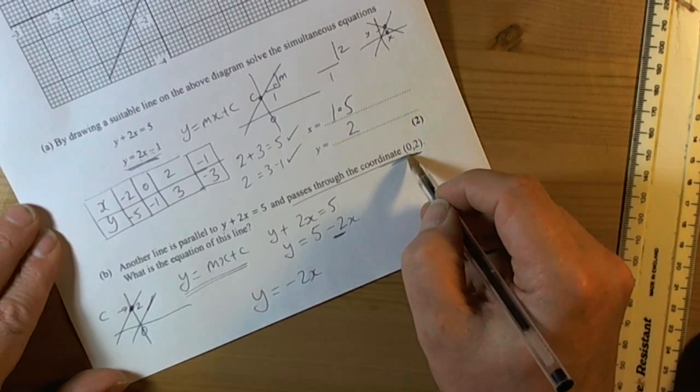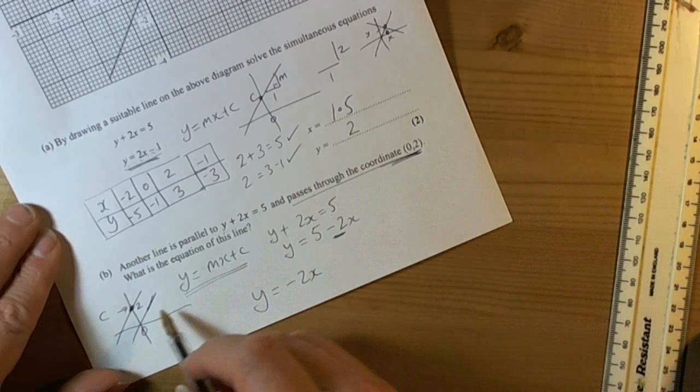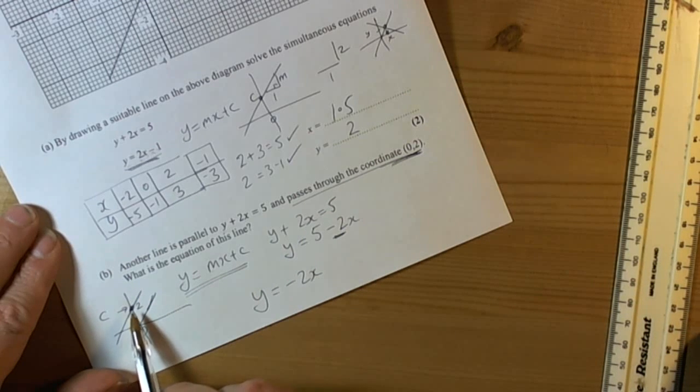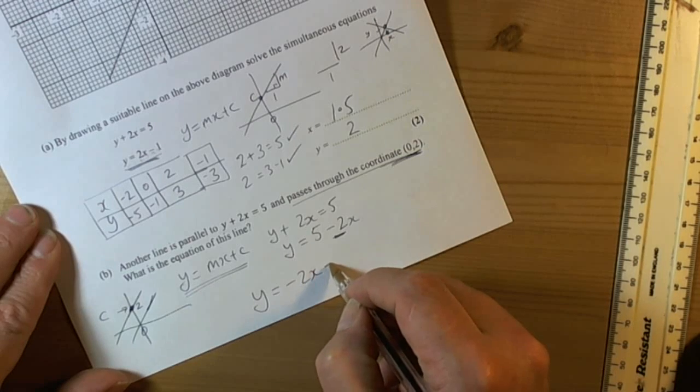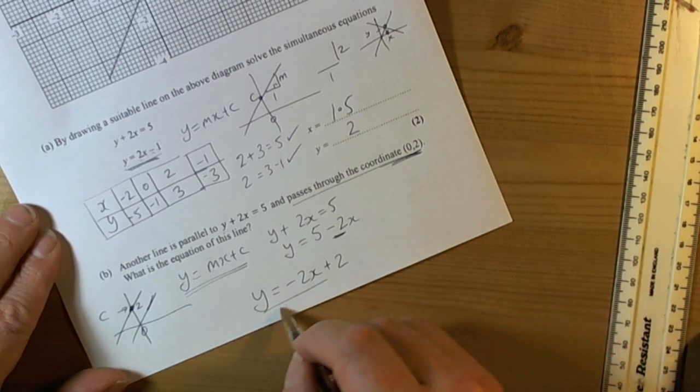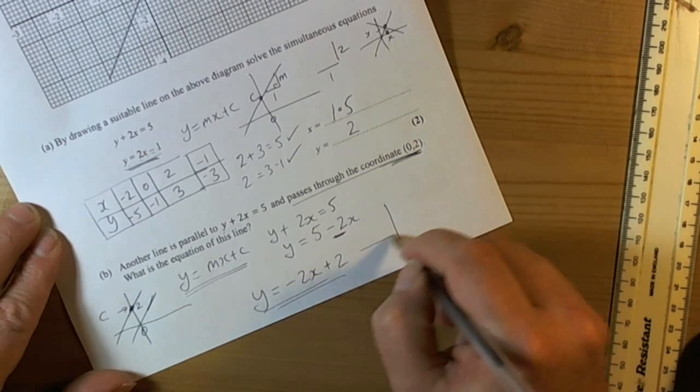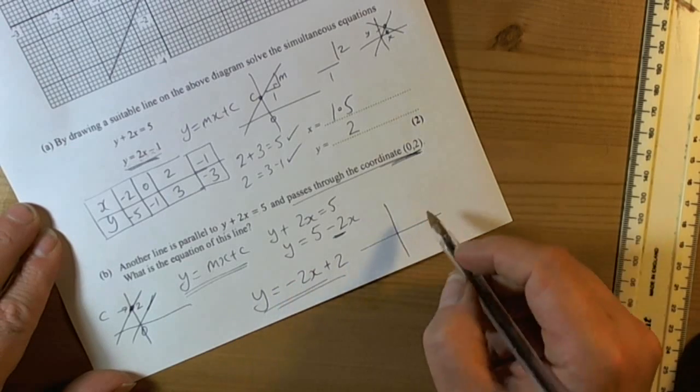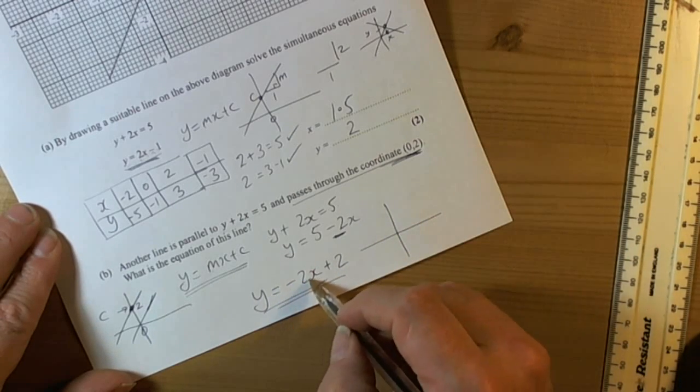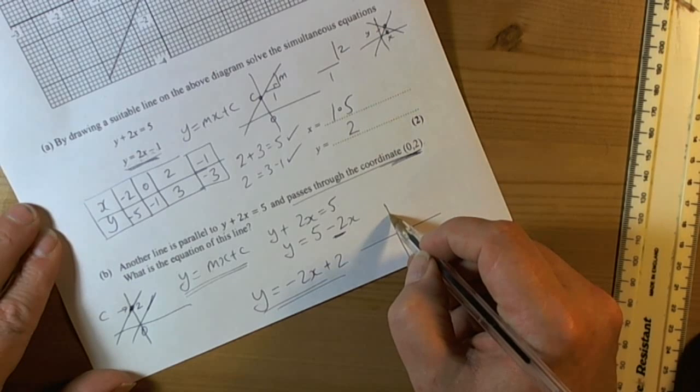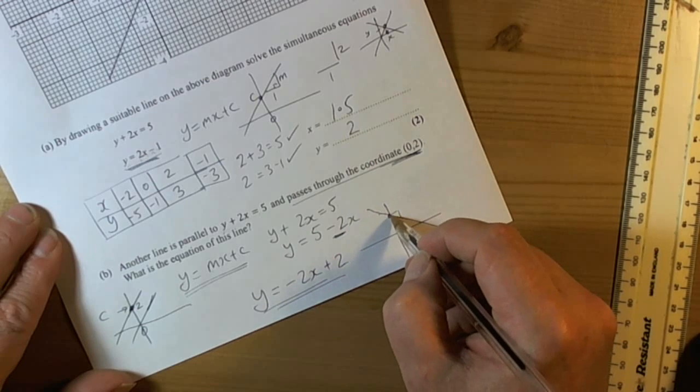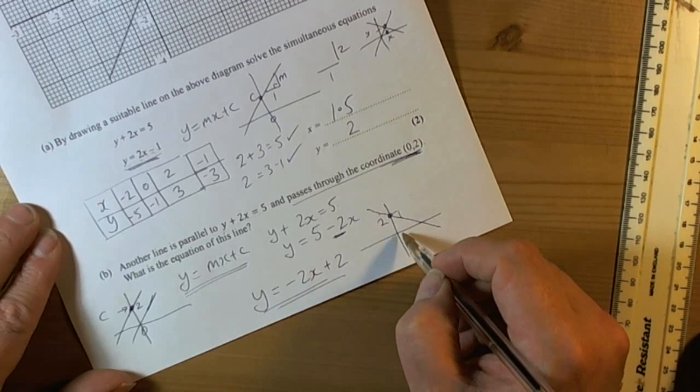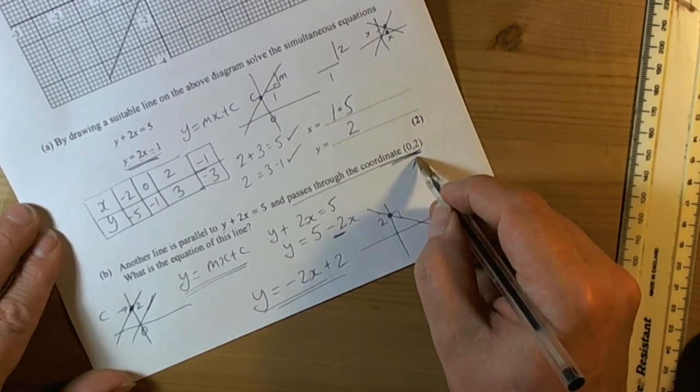But we also notice from the coordinate they told us the line is going to go through, that it must go through 2. So minus 2x plus 2 is the final answer for that question. In terms of the way this function looks, minus 2x is a negative gradient, so for every one we go across we go down 2. So the line is going to go in that direction and cross at the point 2.